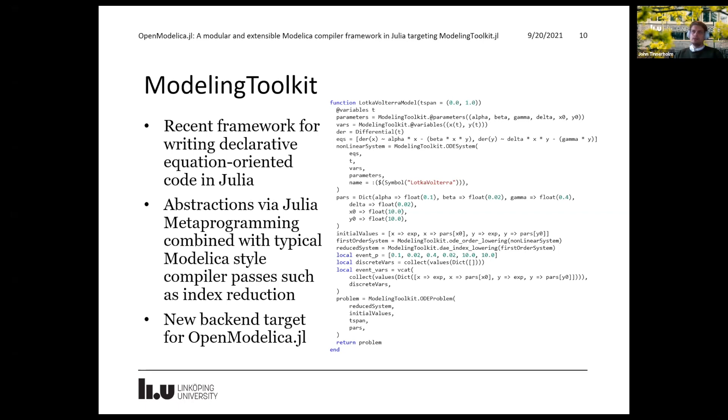It also comes with several Modelica style compiler passes such as index reduction built in. And ModelingToolkit is a current new backend target for OpenModelica.jl. And to the right, you can see some examples of some ModelingToolkit code that is automatically generated using our new compiler.